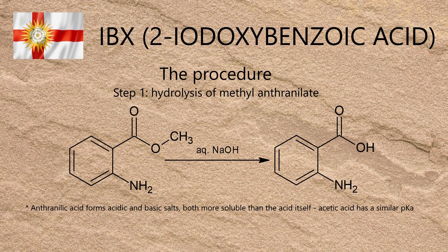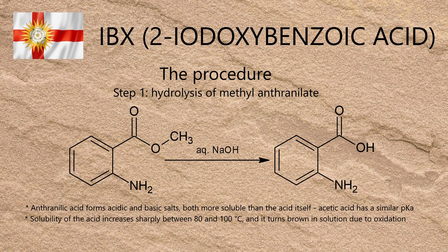Using a stronger acid than acetic would have formed the acidic salt of anthranilic acid instead of the acid itself. Like the alkaline salt, the acidic salt is much more soluble in water than the acid and much harder to crystallise. The temperature was held at 80 degrees instead of boiling point, because the solubility of anthranilic acid in water increases considerably between 80 and 100 degrees, meaning a lot more water has to be boiled off for it to crystallise. It also oxidises in water at high temperature, and the longer it's spent in solution, the more brown and discoloured it becomes.